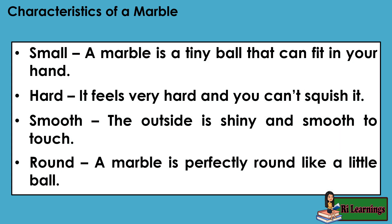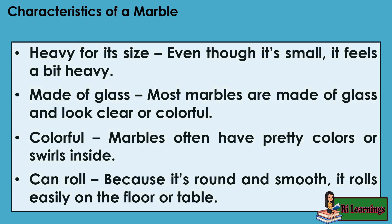A marble is a tiny ball that can fit in your hand. Hard — it feels very hard and you can't squish it. Smooth — the outside is shiny and smooth to touch. Round — a marble is perfectly round like a little ball. Heavy for its size — even though it's small, it feels a bit heavy. Made of glass — most marbles are made of glass and look clear or colorful, often with pretty colors or swirls inside. Can roll — because it's round and smooth, it rolls easily on the floor or table.